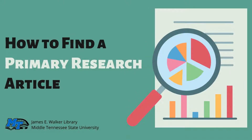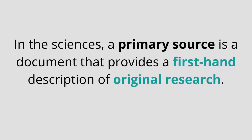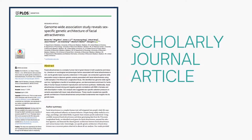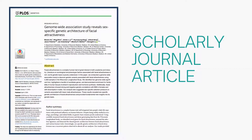How to Find a Primary Research Article, brought to you by the James E. Walker Library at Middle Tennessee State University. In the sciences, a primary source is a document that provides a first-hand description of original research. An example of a primary source is a scholarly journal article in which researchers describe and detail their research.